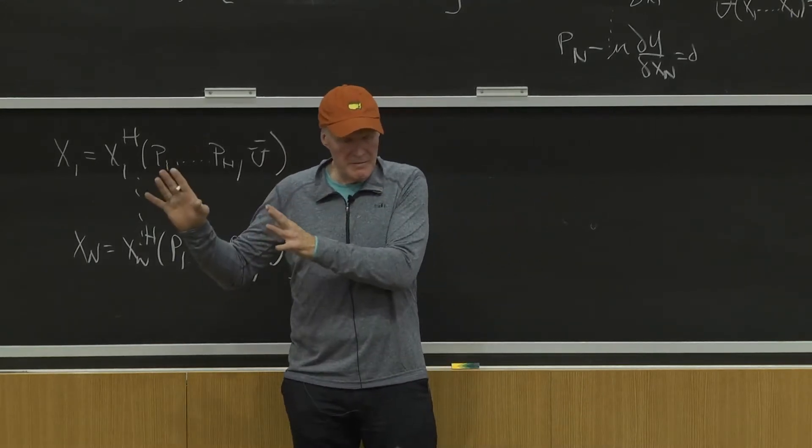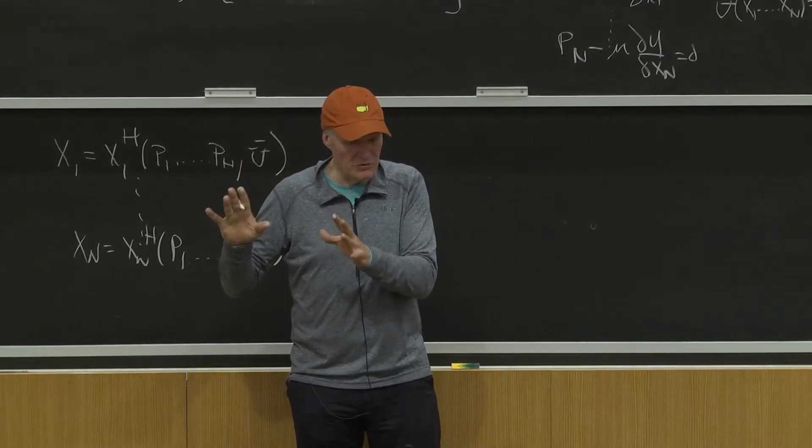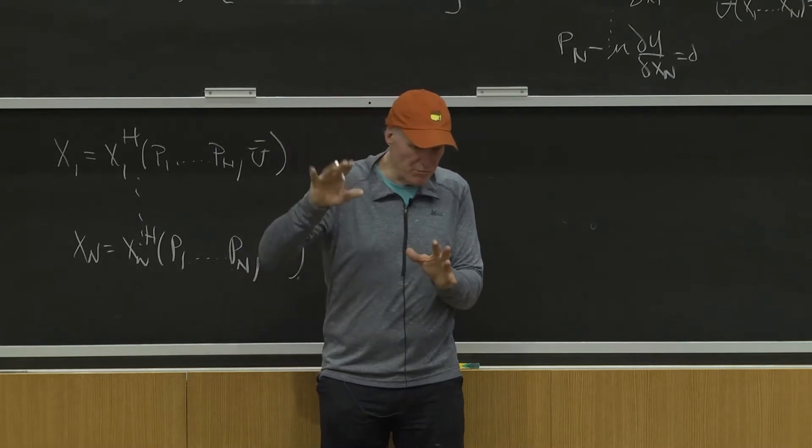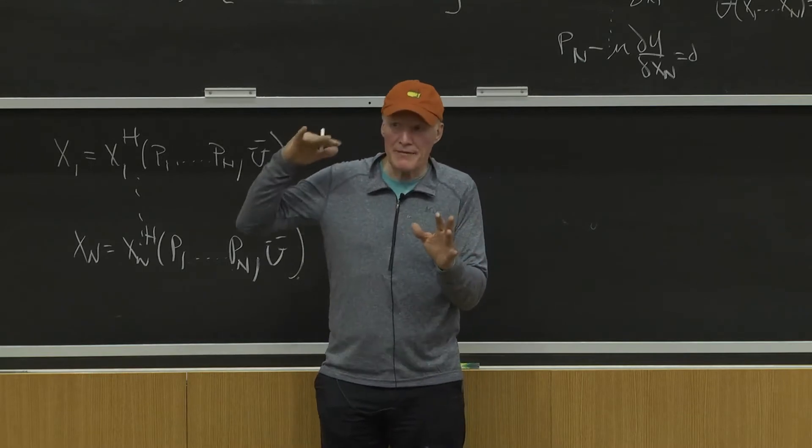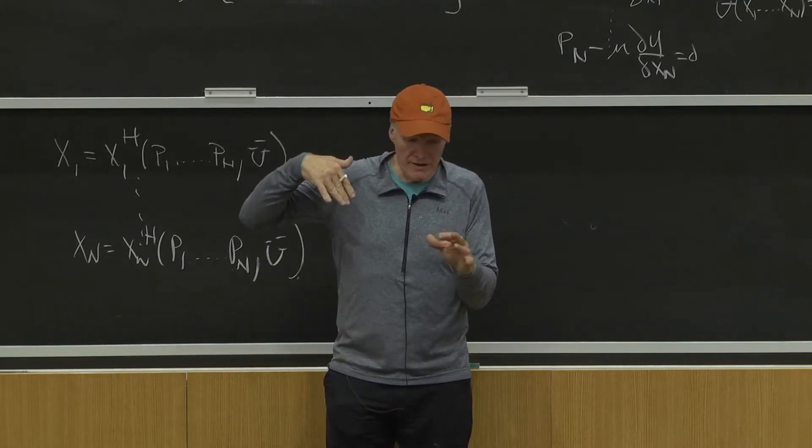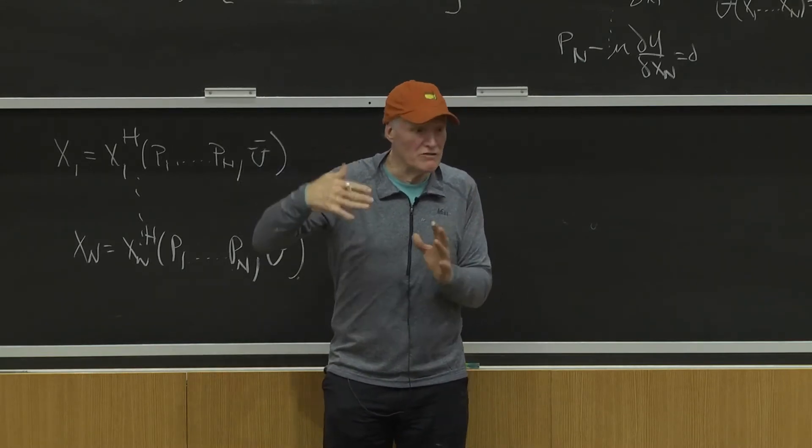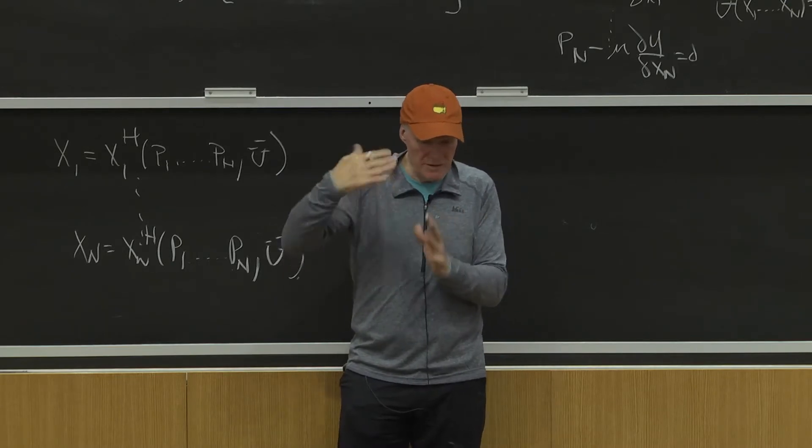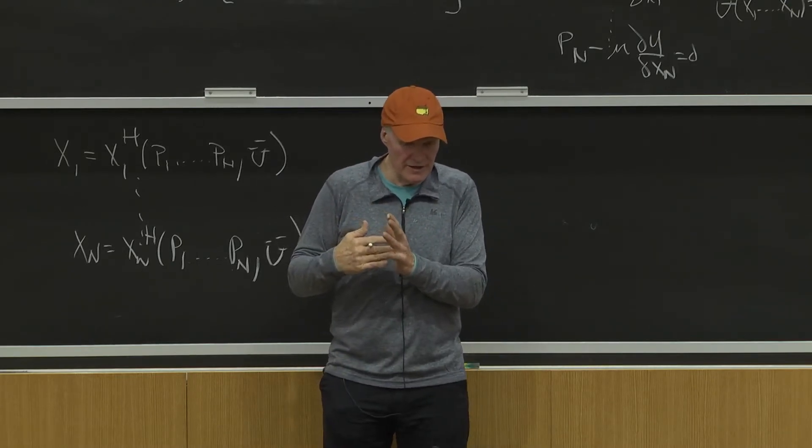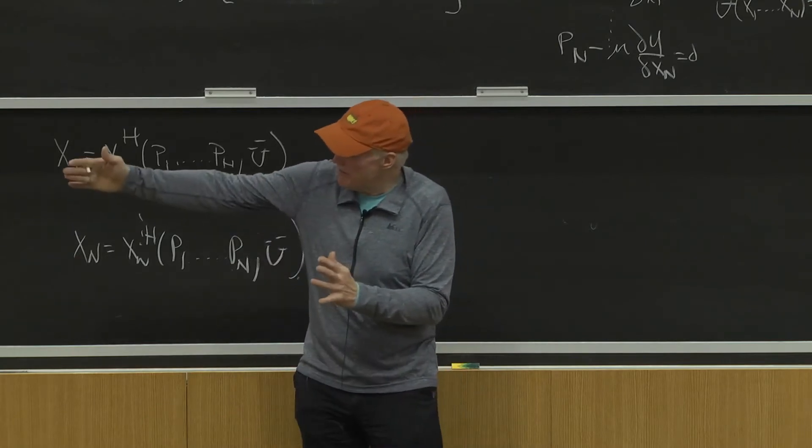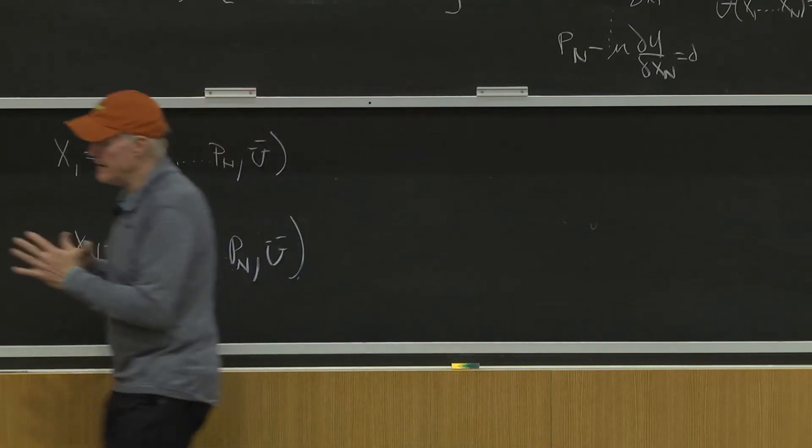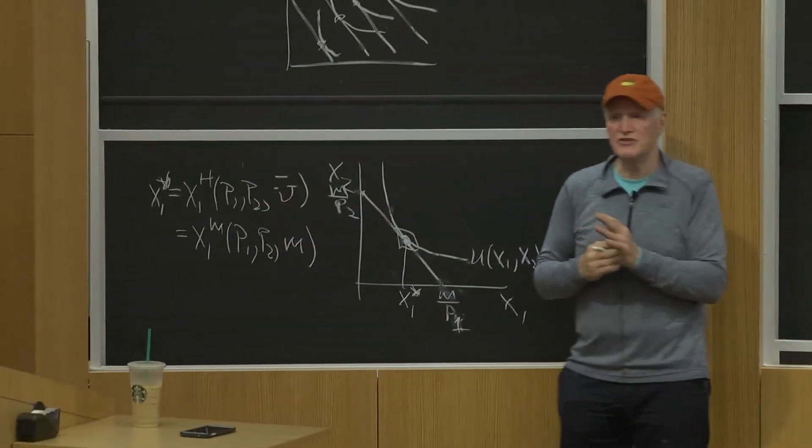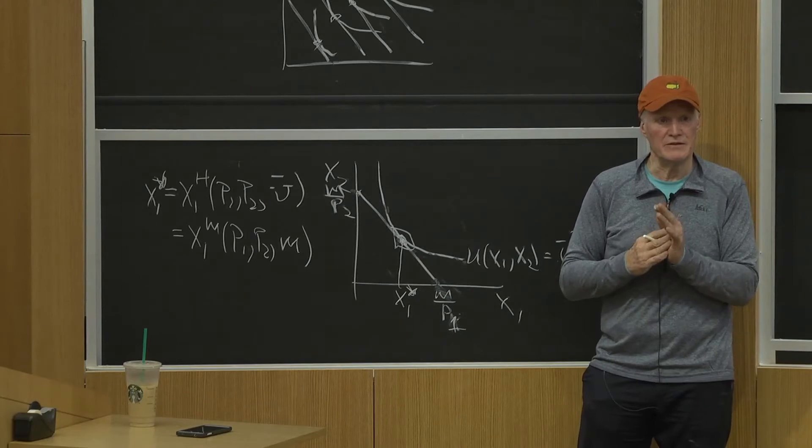That yields a set of Marshallian demand curves that describe the consumer's choice as a function of prices and income. I could then rethink about that problem from the other perspective as a cost minimization problem, where he's minimizing costs subject to a given level of utility, which leads me to a set of Hicksian demand curves, describes those same points, not by the income that you're required, but by the level of utility achieved. That's the two systems.